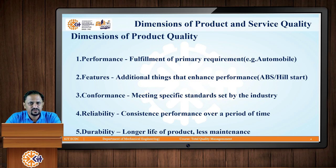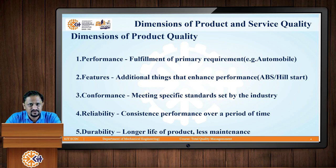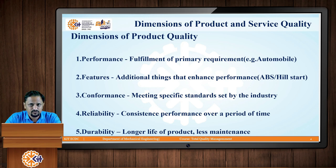Next is conformance — meeting specific standards set by the industry. Whenever a company or organization produces its product or service, it should have conformance to specific industry standards. Next is reliability — consistent performance over a period of time. If your product or service gives consistent performance over a specific period, it is called reliable. Next is durability — the longer life of a product. If the product has less maintenance and lasts long, it is durable.